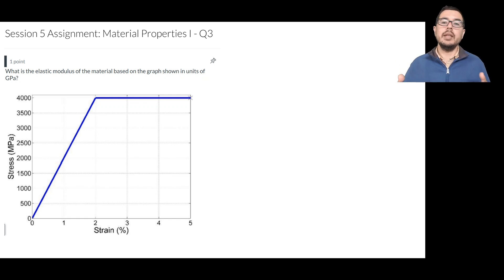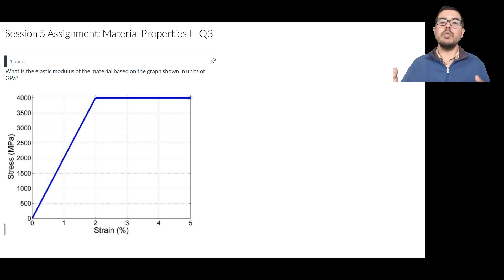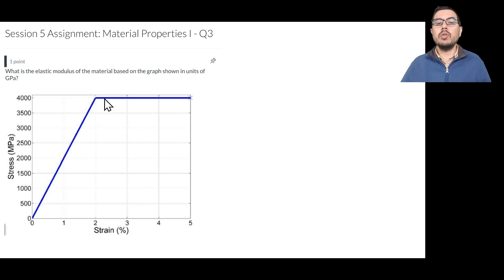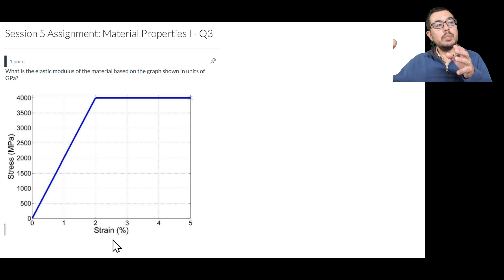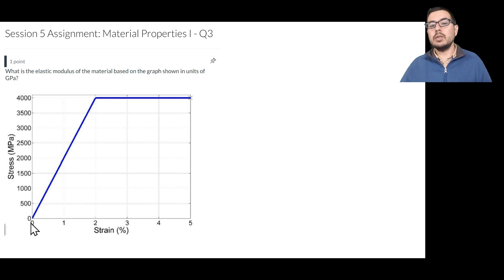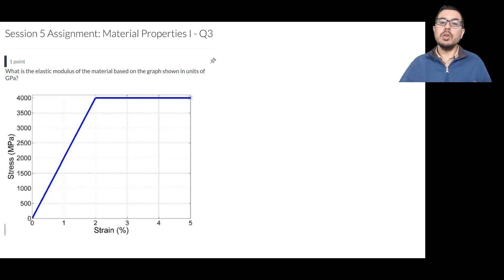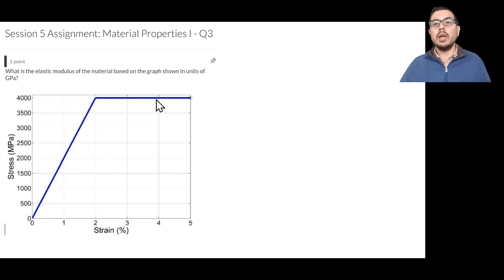This problem is a classic where we're asked to calculate the elastic modulus given a plot for a material tensile test. The plot shows stress on the y-axis — force divided by cross-sectional area — versus strain on the x-axis, which is displacement divided by initial length. It starts at (0,0) and goes up to 2% strain with a stress of 4000 megapascals, after which it becomes perfectly plastic, as shown by the horizontal line.